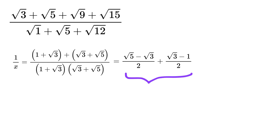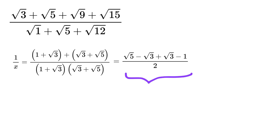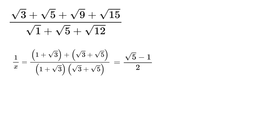Now by adding these two results, since the denominators are the same, we combine the numerators. Oh look — the square root of 3 gets cancelled out, and we are left with square root of 5 minus 1 divided by 2, as 1 over x.